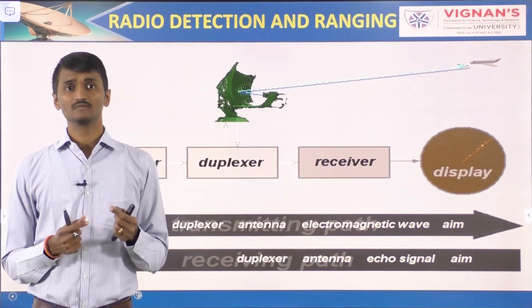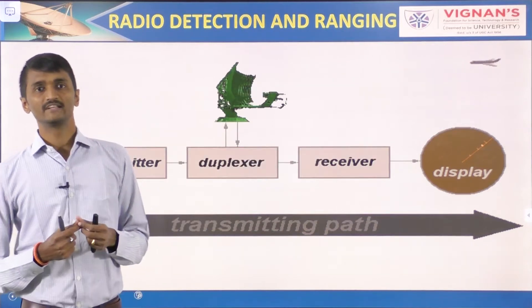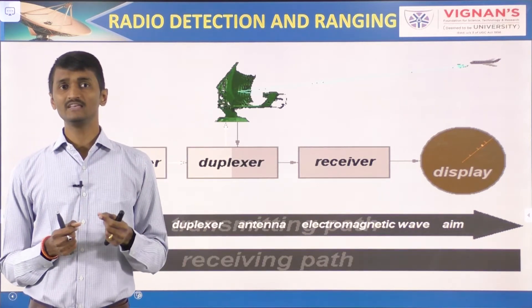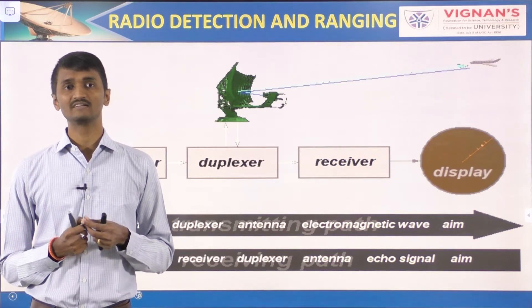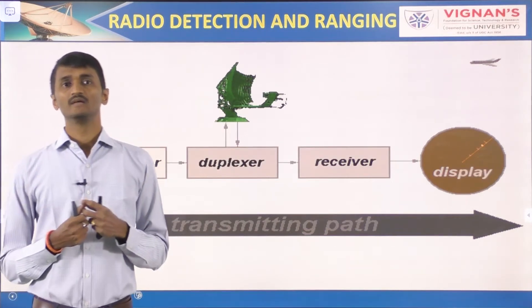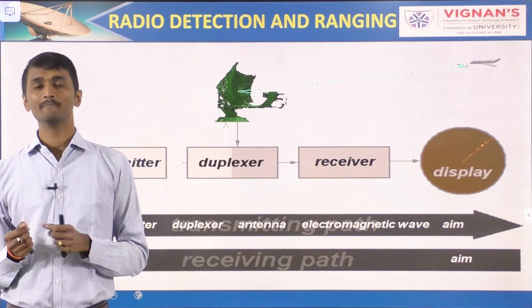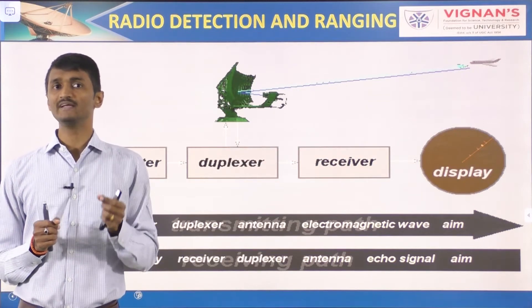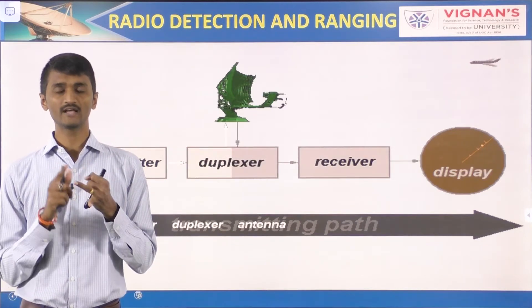Radar cannot resolve detail or color as well as the human eye at optical frequency. However, radar can see in conditions that do not permit the eye to see, such as darkness, rain, and smoke. In addition, radar has the advantage of being able to measure the distance or range of an object — this is probably its most important attribute.